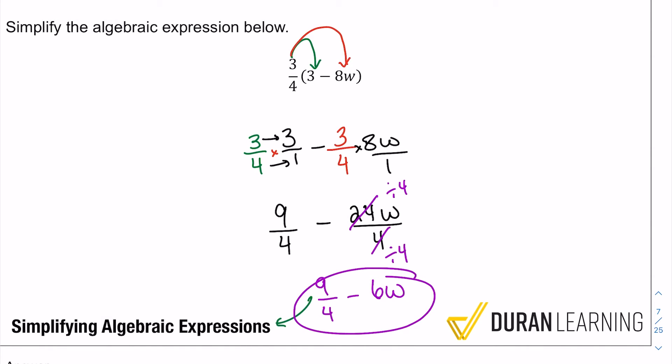Another way you can write it, you can just change this right here into a mixed number. And nine quarters into a mixed number, well four fits into nine two times and you're left with that one one fourth. So we can say two and one fourth minus six w as an alternate way for the answer.